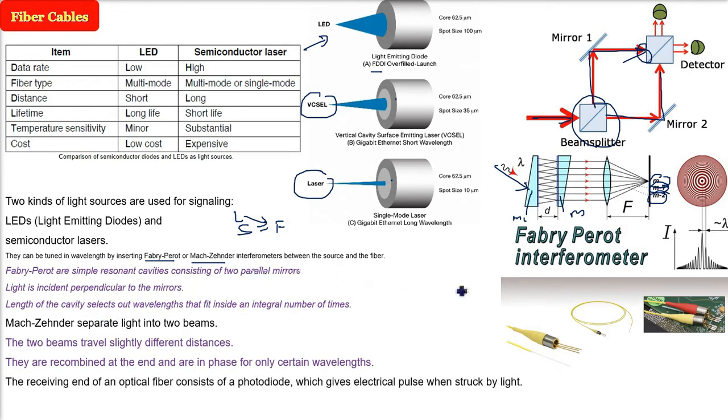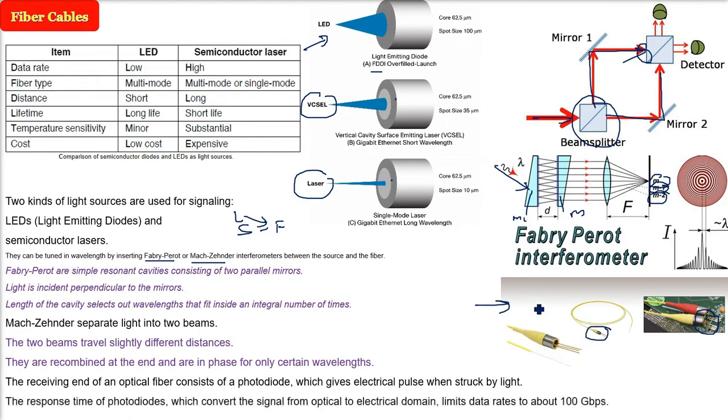Now the receiving end, what will be there? There has to be a photodiode. The receiving end of an optical fiber consists of a photodiode which gives an electric pulse whenever light strikes it. The response time of the photodiode, which converts the signal from optical to electrical domain, limits data rates to about 100 Gbps. Now you know the first discussion we had. Why we are limited to 100 Gbps? Because of this.